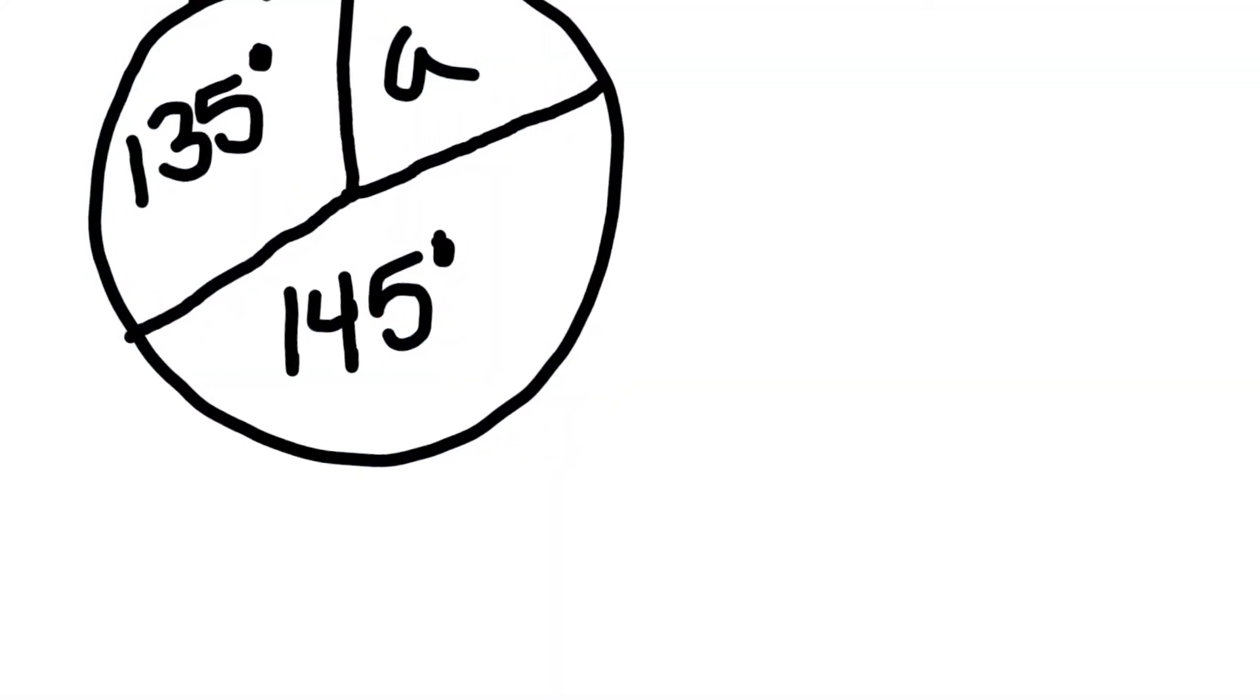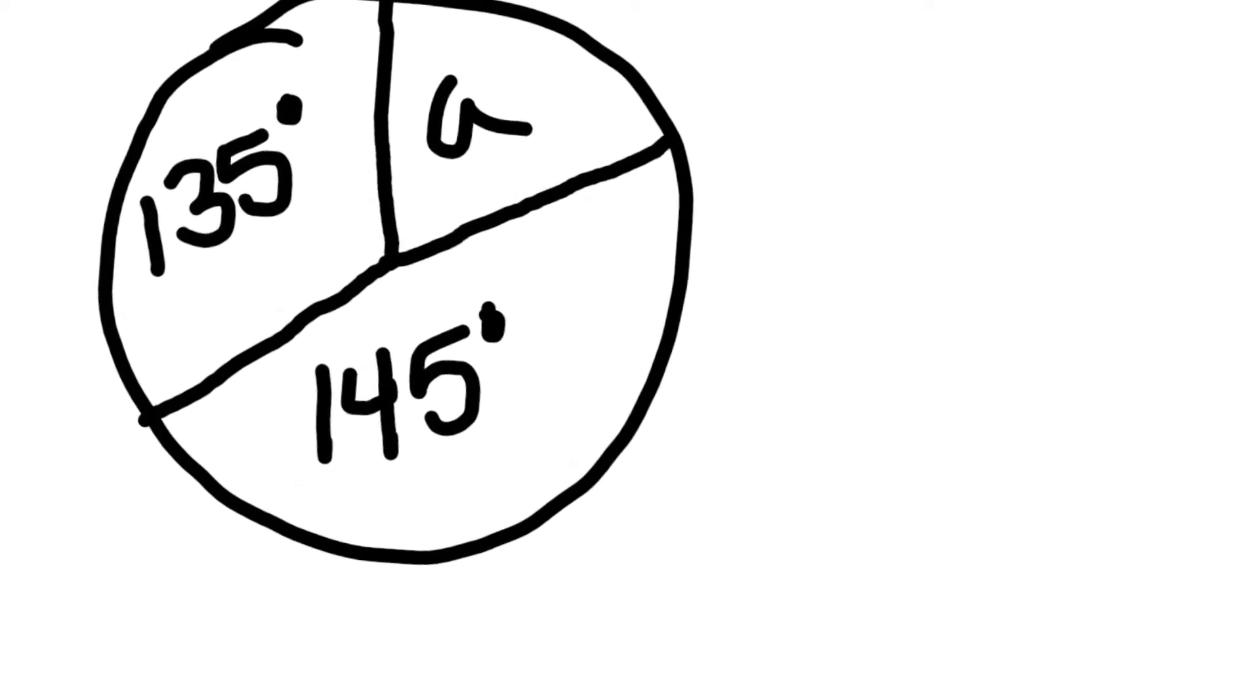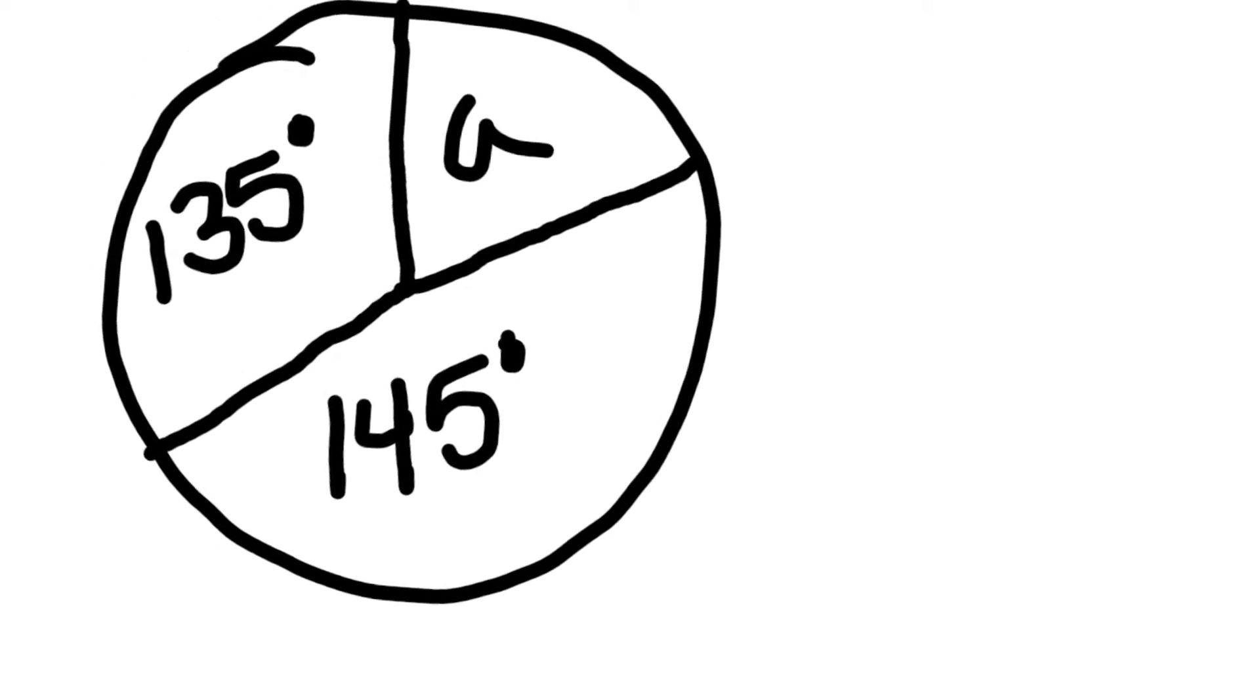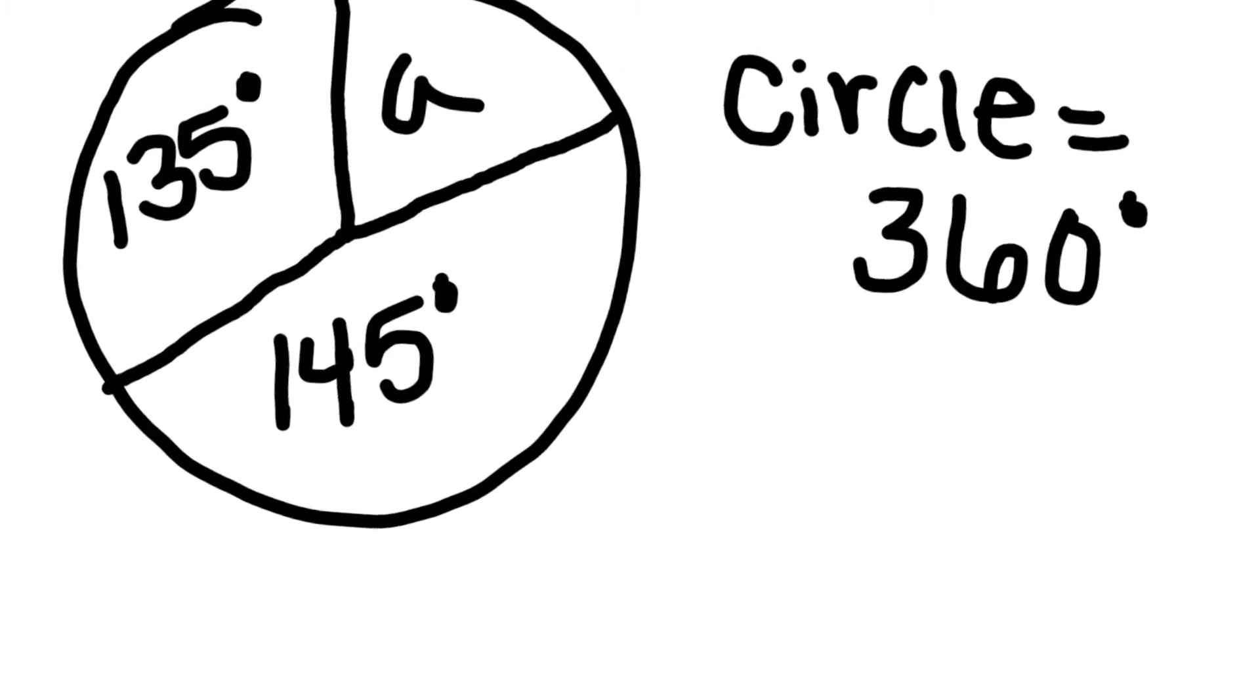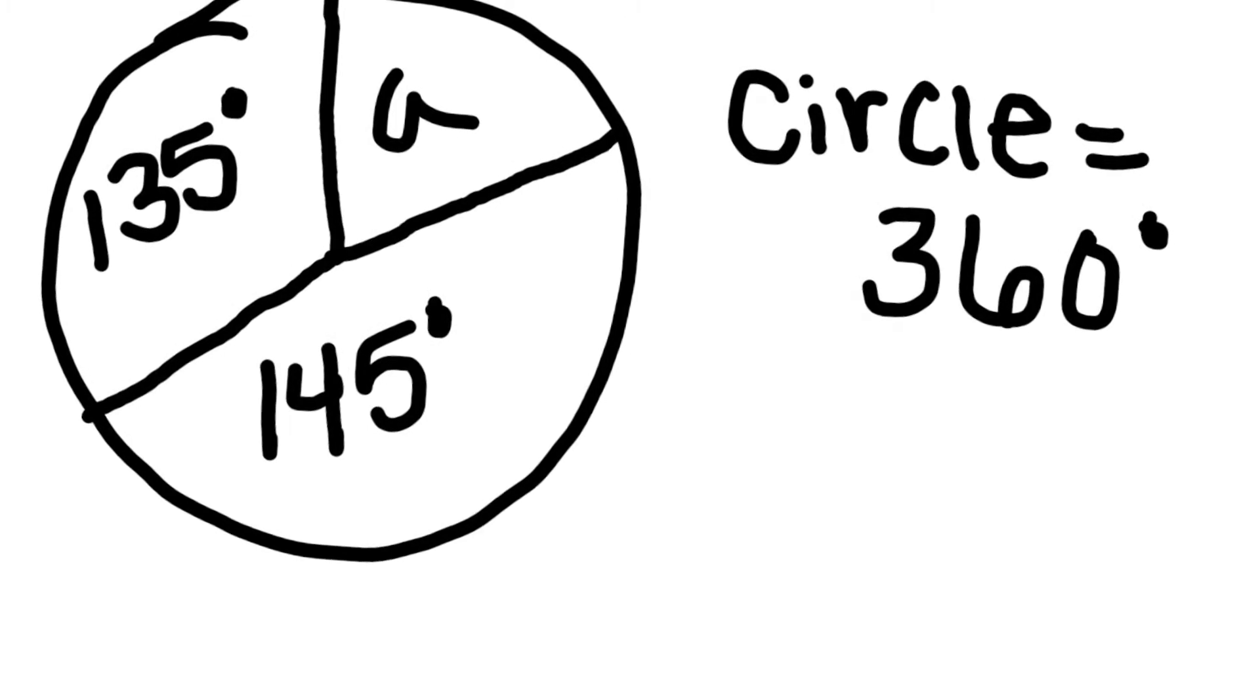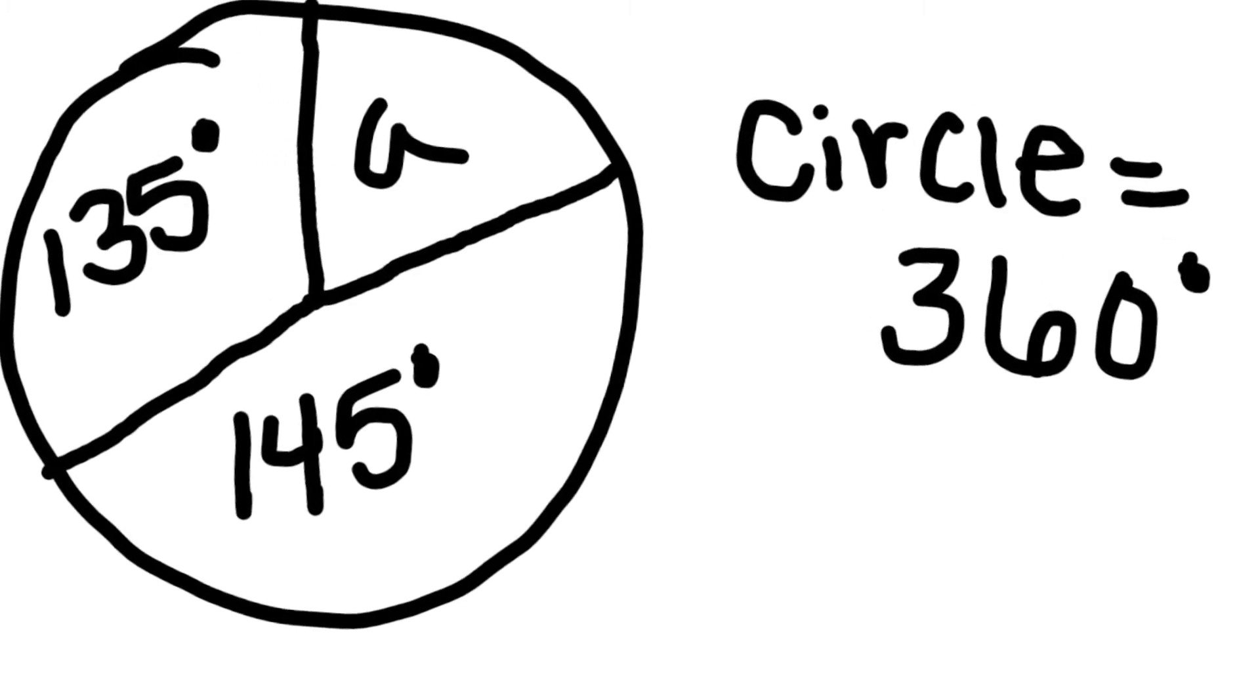To begin this problem, I started by redrawing my figure so that I know I have a 135 degree angle, a 145 degree angle, and angle A. I then made a note to myself that a circle is equal to 360 degrees. This is going to help me as I begin to get ready to solve for A.